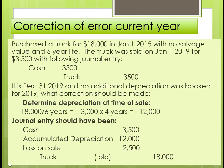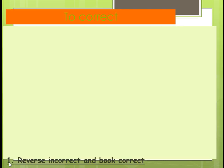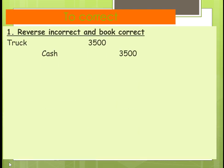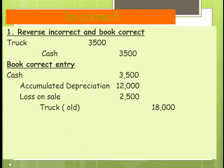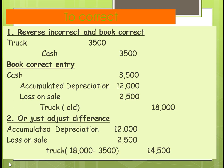There are two ways to correct this. First, you can reverse out the old journal entry and then book the correct one — this gives you the best audit trail. The other option is to just adjust the difference. The first method is recommended because it leaves a clear trail, since later on you won't remember why or what you did.